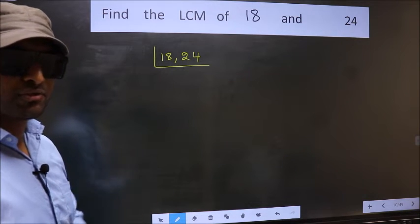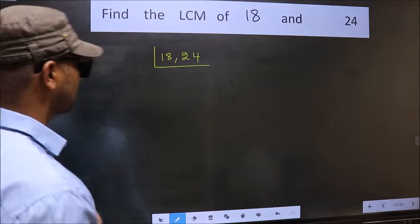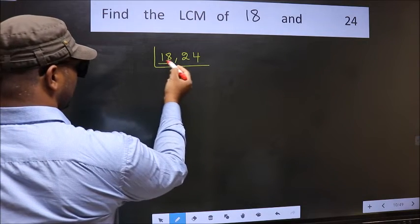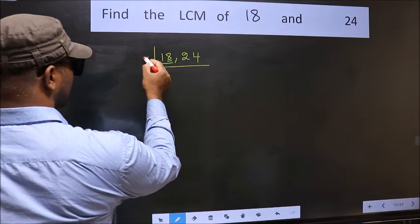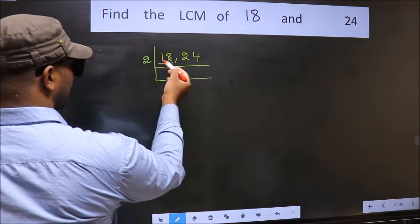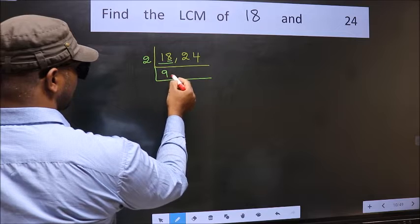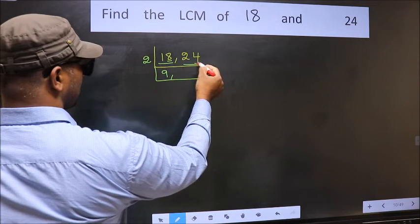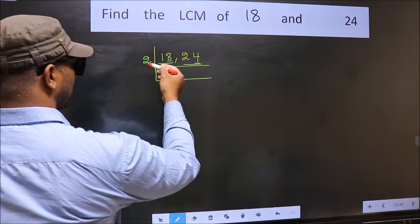Now focus on the first number, which is 18. The last digit is 8, so take 2. When do we get 18 in the 2 table? 2 times 9 is 18. Now the other number 24 — last digit 4, so this is divisible by 2.